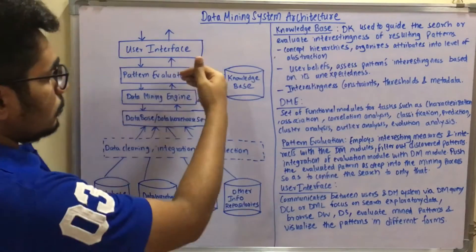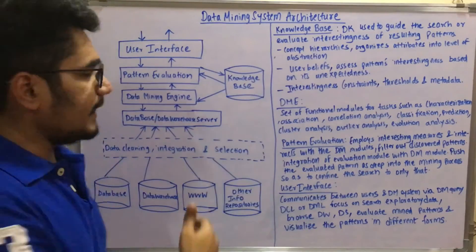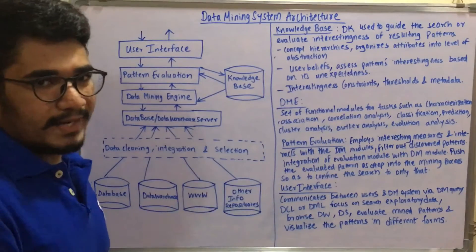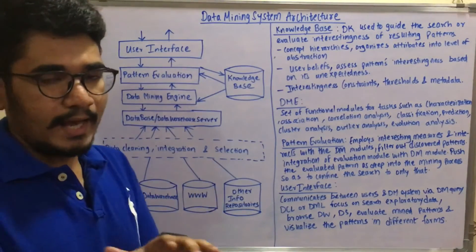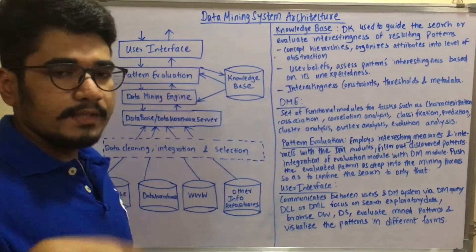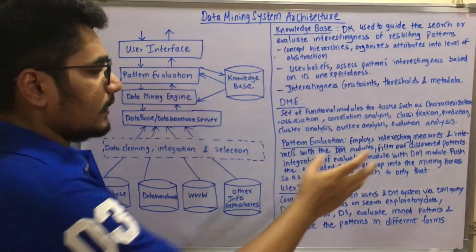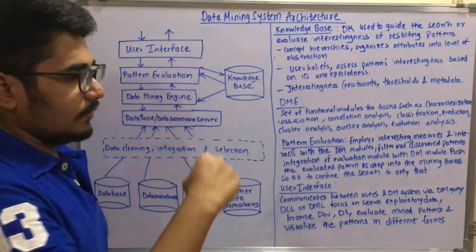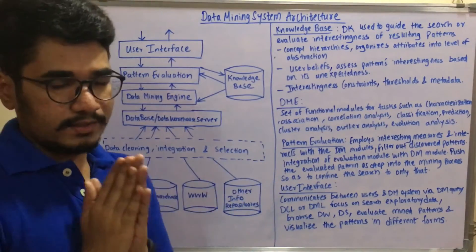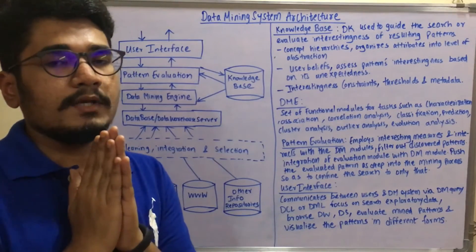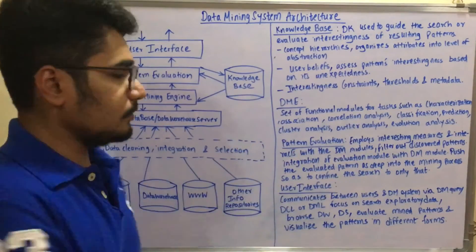The pattern evaluation module sits above the DME. It employs interestingness measures and interacts with the data mining module to filter out discovered patterns based on previous transaction history. This module can be integrated with the data mining module so that all push activities confine the search to the relevant pattern — ensuring your analysis stays focused on the specific task at hand.